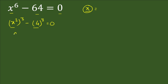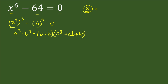This expression fits the form a³ minus b³. We will use the well-known identity: a³ minus b³ equals (a minus b)(a² plus ab plus b²). Here a is x² and b is 4.